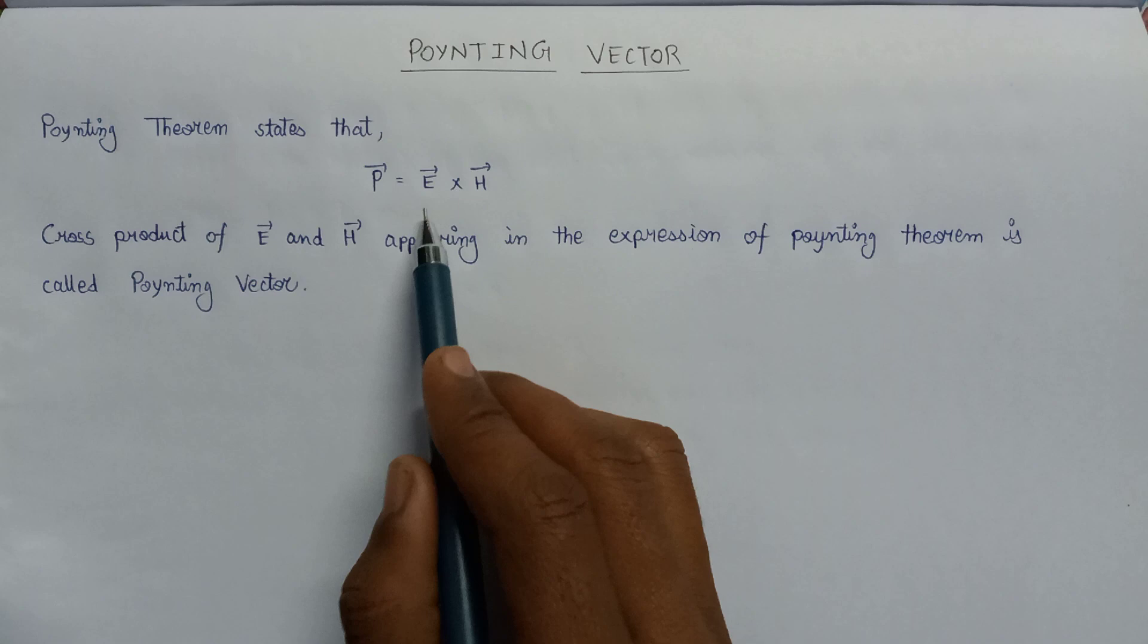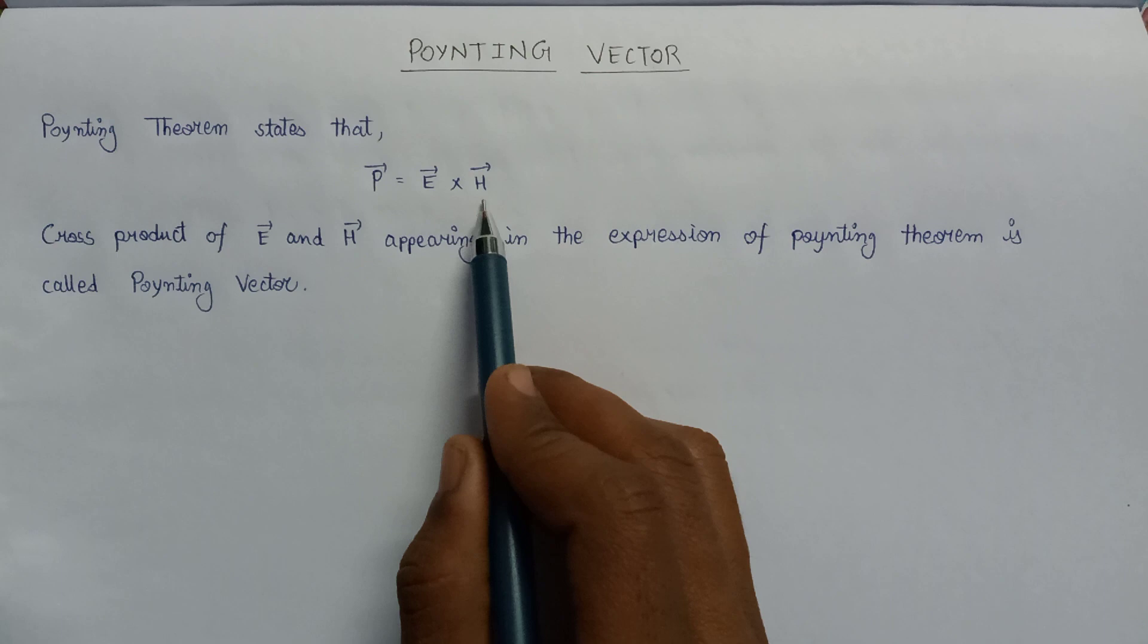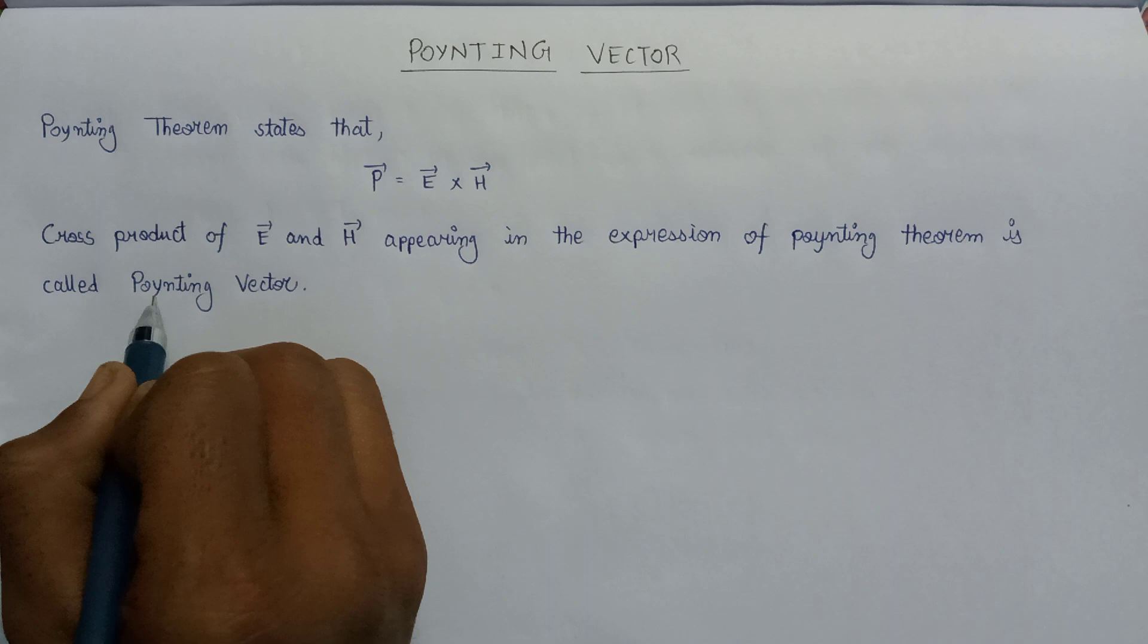Here E vector represents the electric field intensity and H vector represents the magnetic field intensity. And this expression, that is E cross H, in the expression of the Poynting theorem is nothing but Poynting vector.